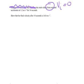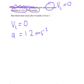Once we've got the important information, we'll list it all out so we don't lose any of it. We've got the initial velocity equals zero. We've got the acceleration equals 1.2 meters per second squared. And the time she's accelerating for is 14 seconds.